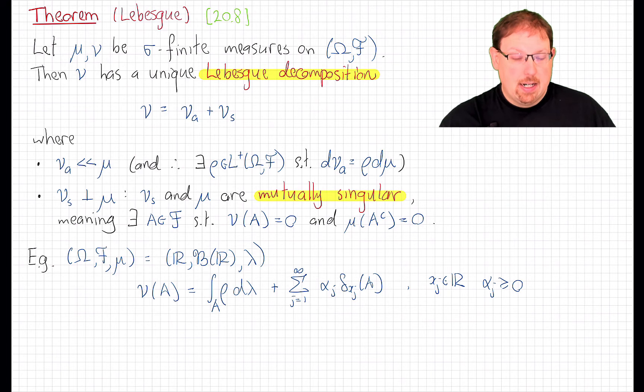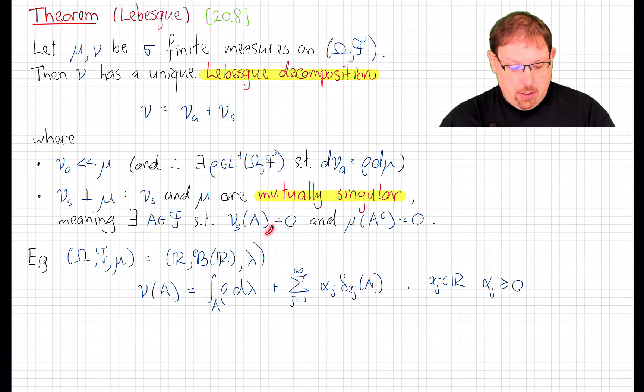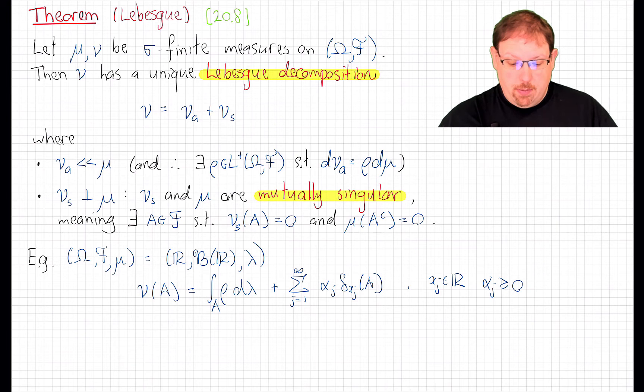So nu has a unique Lebesgue decomposition with respect to mu, and that means that we can write nu as a sum of two measures, nu a and nu s. Nu a is the absolutely continuous part of nu with respect to mu. Nu s is the singular part of the measure nu with respect to mu. It is mutually singular from mu, which means exactly the following. There is some measurable set A which this singular measure gives total mass zero, but for which the original measure mu is fully supported on. That is, it has full measure with respect to mu. In other words, its complement has measure zero with respect to mu.